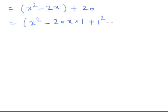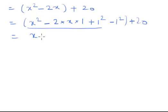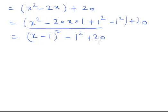I'll add 1² and subtract 1², plus 20. So you have these three terms together forming (x - 1)². The minus or plus sign depends on the sign of the middle term — as long as it is minus, this is minus; if it is plus, the term is plus. So (x - 1)² - 1² + 20, giving (x - 1)² - 1 + 20 = (x - 1)² + 19.